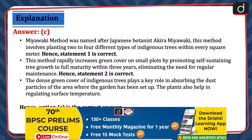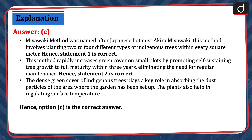The Miyawaki method was named after Japanese botanist Akira Miyawaki. This method involves planting 2 to 4 different types of indigenous trees within every square meter. Hence, statement 1 is correct. This method rapidly increases green cover on small plots by promoting self-sustaining tree growth to full maturity within 3 years, eliminating the need for regular maintenance. Hence, statement 2 is correct. The dense green cover of indigenous trees plays a key role in absorbing dust particles, and the plants also help in regulating surface temperature.